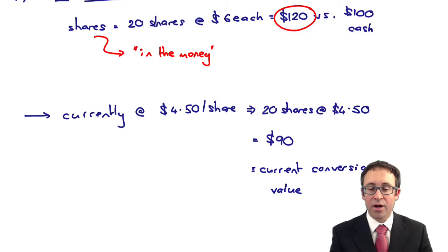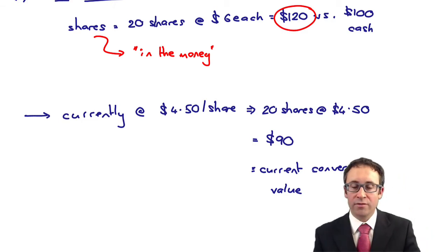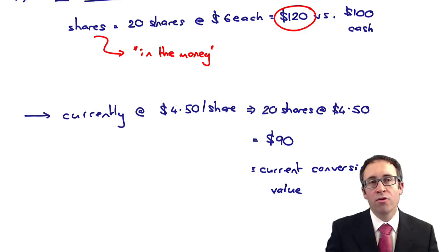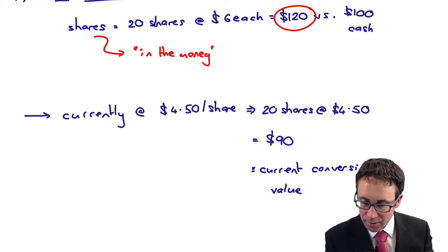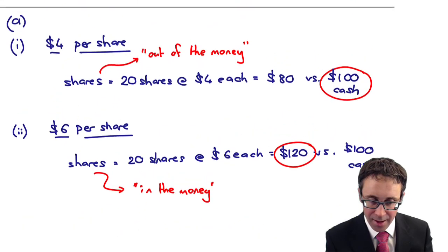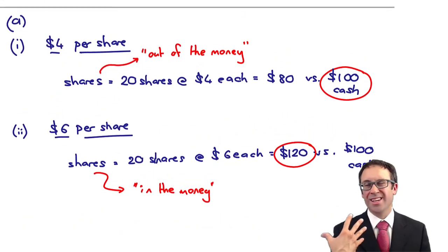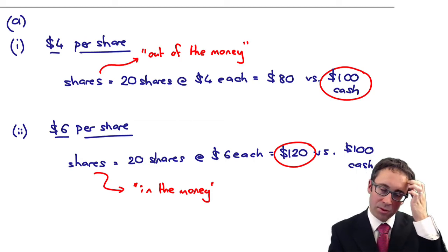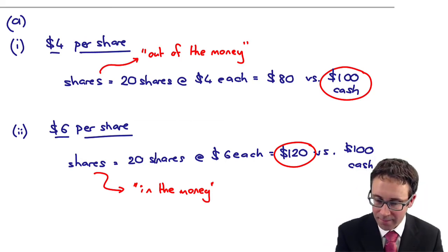So a little bit of terminology there. The current conversion value is $90. I know it's not asked for within the question, but it becomes relevant as we go through and work part B. But in answering part A, you've got your current conversion value at $90. At $4 per share, we're going to take the cash. If it was to go to $6 per share in 2019, we will take the shares. So that answers part A.